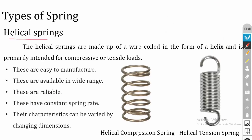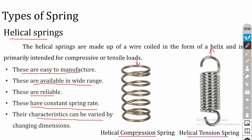The first and most common spring is the helical spring, which has two types: helical compression spring (subjected to compressive loads) and helical tension spring (which withstands tensile loads). Advantages of helical springs: they are easy to manufacture, available in a wide range, reliable, have a constant spring rate, and their stiffness characteristics can be varied by changing dimensions — mainly wire diameter (d) or coil diameter (D).